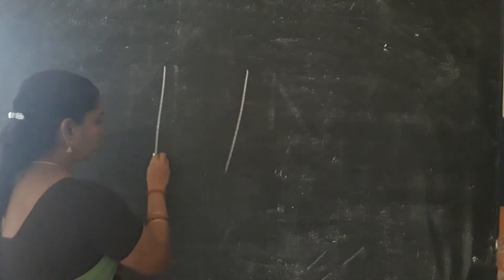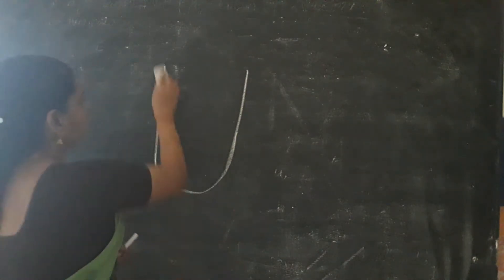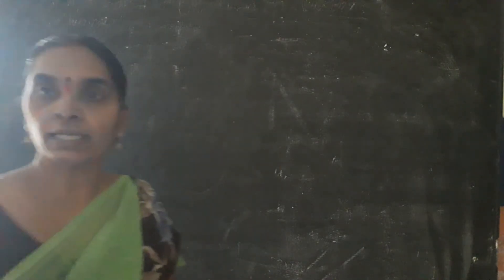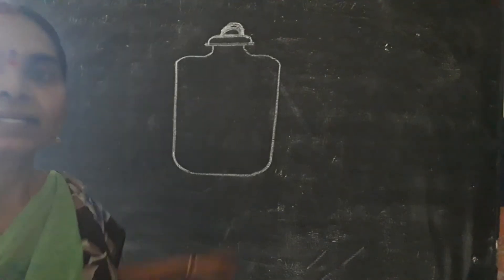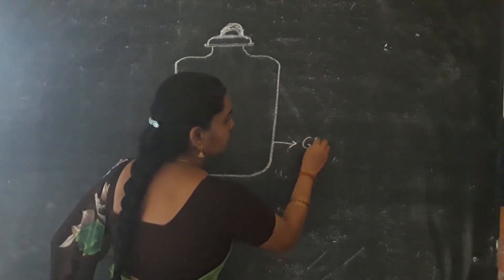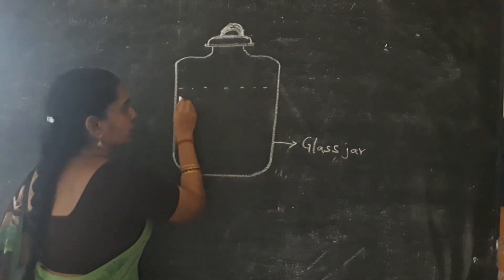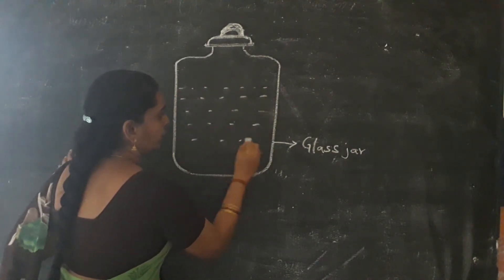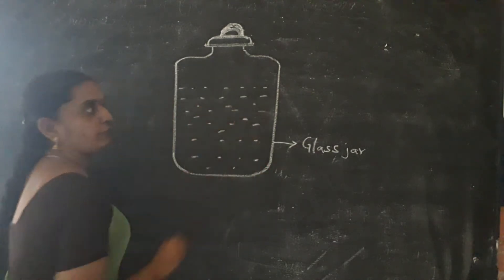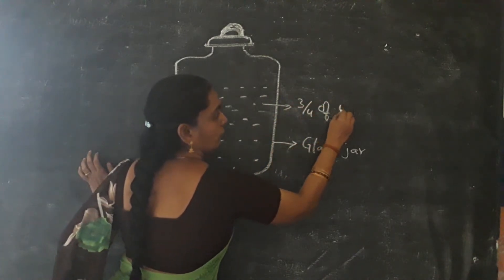The wastewater that is being collected should be taken into a glass jar. I will tell you how it is by drawing the picture and explain through this. This is a glass jar. You are filling three-fourths of the jar with water.